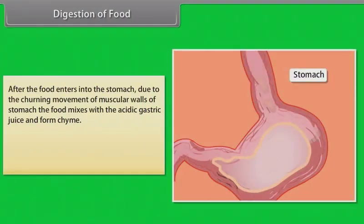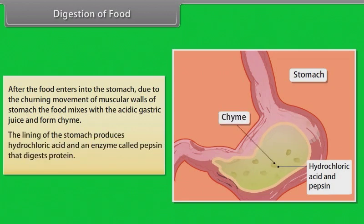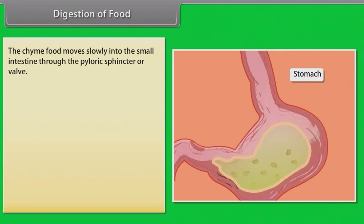After food enters the stomach, the churning movement of the muscular walls mixes the food with acidic gastric juice to form chyme. The lining of the stomach produces hydrochloric acid and the enzyme pepsin, which digests protein. The chyme then moves slowly into the small intestine through the pyloric sphincter or valve.